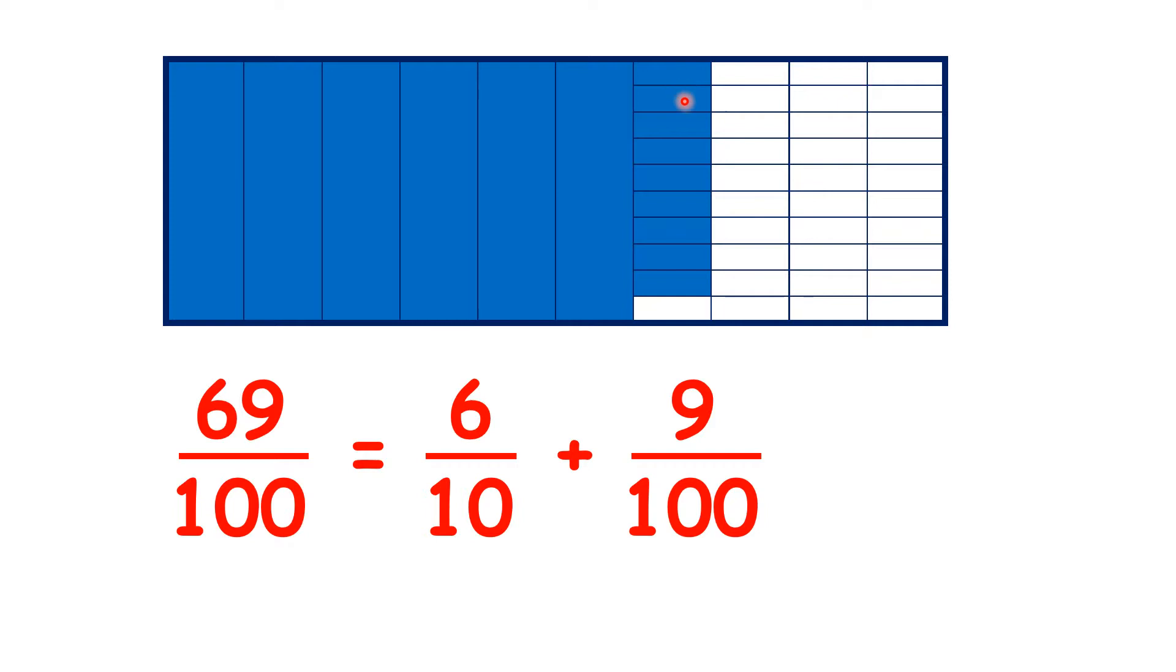And we still have 9 of these smaller rectangles, so we have 9 hundredths. So 69 hundredths is the same as 6 tenths plus 9 hundredths. So we have the equal sign here to show that they're equal.